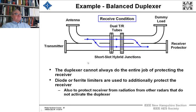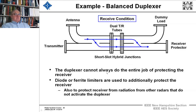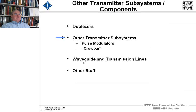In the receive mode, energy from the antenna comes down and goes straight through the hybrid junctions. The dummy load is turned off and the return signal goes right through to the receiver protector and into the receiver. This is the receive condition of the balanced duplexer implementation.